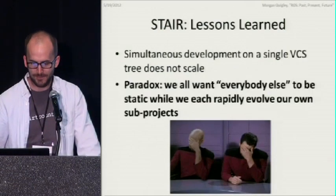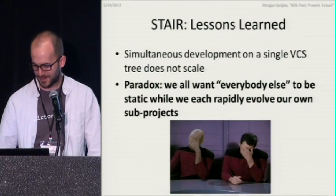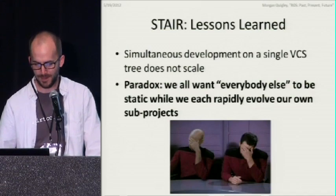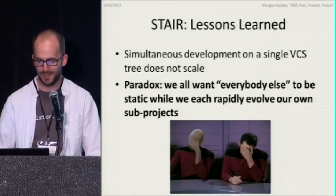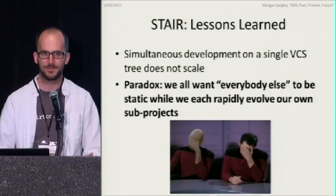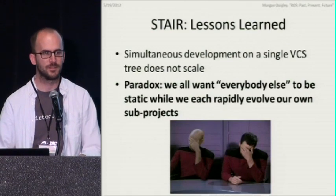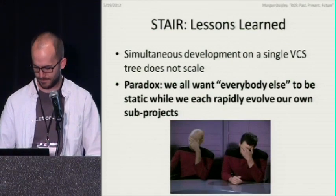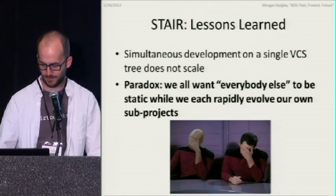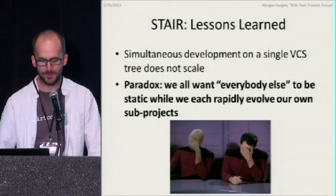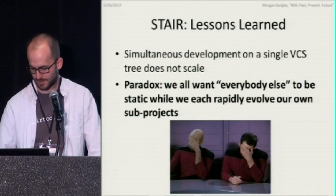Another lesson: simultaneous development on a single repository just doesn't scale. The paradox is that everyone wants everyone else to hold on while they work on their code as fast as possible, which serializes rather than parallelizes development. What we really need is methods where each subsystem can be developed independently, targeting stable versions of other subsystems, and then everyone decides together when to move forward to the next release. This problem is not unique to robotics — it's a big deal as any software project starts growing in size.